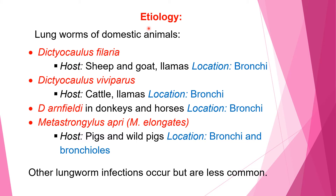Regarding the etiology of Worminous Bronchitis, there are many lungworms of the nematode group affecting domestic animals. Dictyocaulus filaria affects sheep, goat, and llama, with the parasite located in the bronchi. Dictyocaulus viviparus causes infection in cattle and llamas, also located in the bronchi. Dictyocaulus arnfieldi affects donkeys and horses, and its location is also the bronchi.